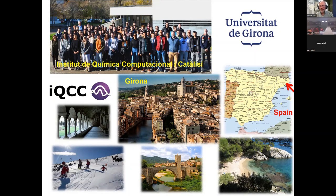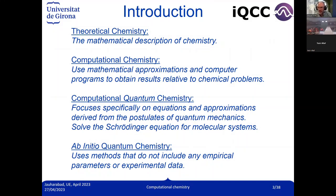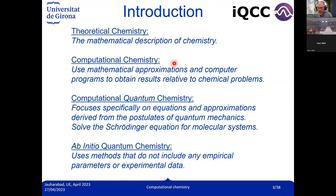Let me start with a short introduction to computational chemistry — not many equations, just some general ideas. In general, we say we are theoretical and computational chemists, but there is a distinction between both. Theoretical chemists develop the mathematical equations — if there is a chemical problem, they put it in mathematical terms. For instance, if you have a charge transfer reaction, someone provides the Marcus equation. Then in computational chemistry, you translate those equations into computer programs to solve chemical problems.